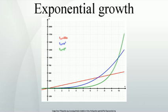The formula for exponential growth of a variable X at the growth rate r, as time t goes on in discrete intervals — i.e., at integer times 0, 1, 2, 3 — is where X0 is the value of X at time 0. For example, with a growth rate of r equals 5% equals 0.05, going from any integer value of time to the next integer causes X at the second time to be 1.05 times, i.e., 5% larger than what it was at the previous time.